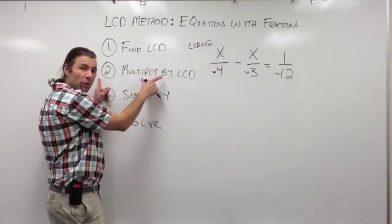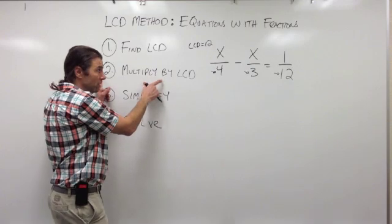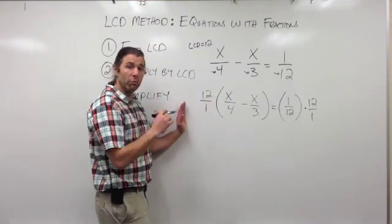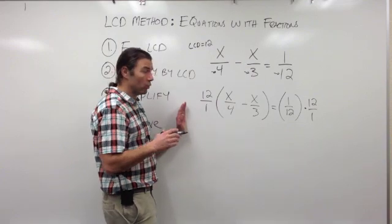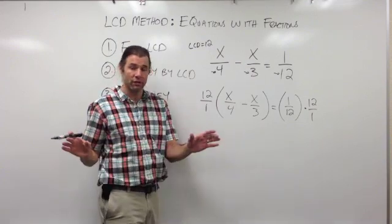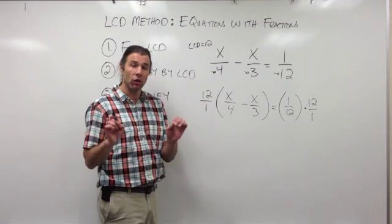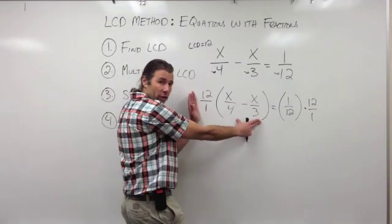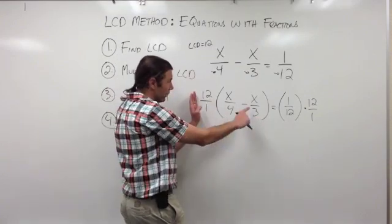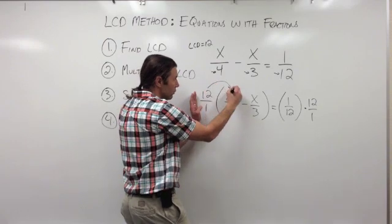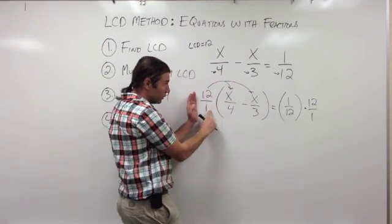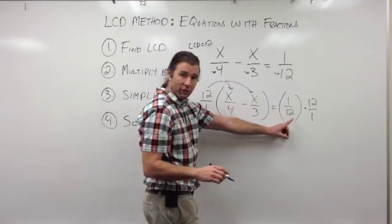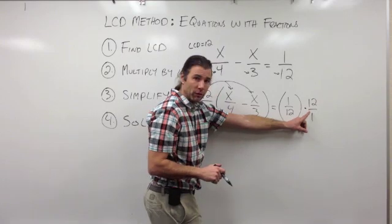The second step is to multiply by the LCD. In an equation, we're allowed to multiply both sides by any number as long as we choose the same number. So I'm multiplying the left side of my equation by 12. I've set up parentheses because I'm going to distribute and multiply that 12 times both of those terms. And on the right side, I've multiplied by 12.